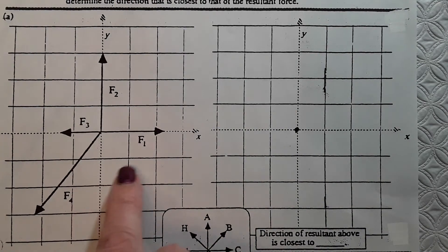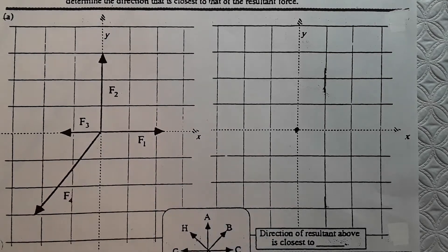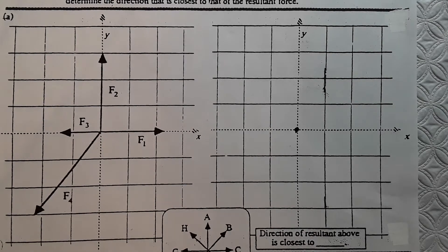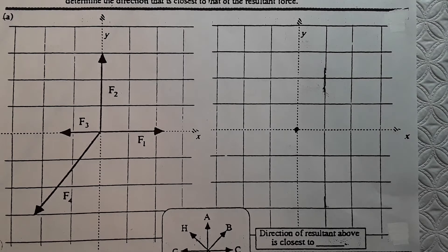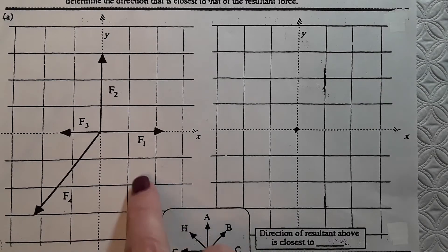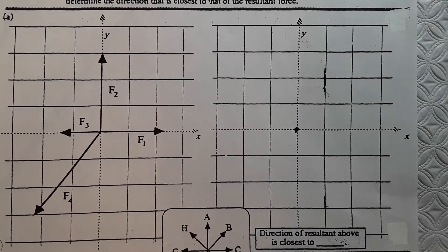Now, I'm going to draw them tip to tail in the order they're numbered. In reality, you should be able to draw them tip to tail in any order and still get the same resultant. That's because of the commutative property in math where you say A plus B equals B plus A. It doesn't matter what order you add them in, you still get the same answer.